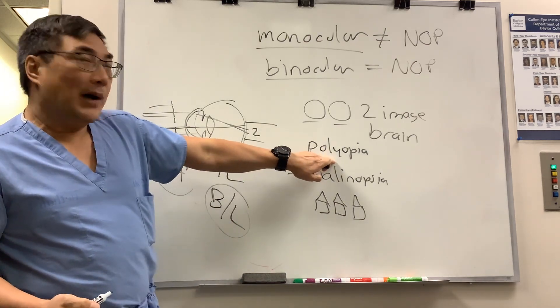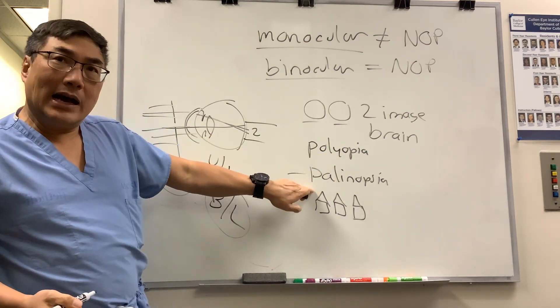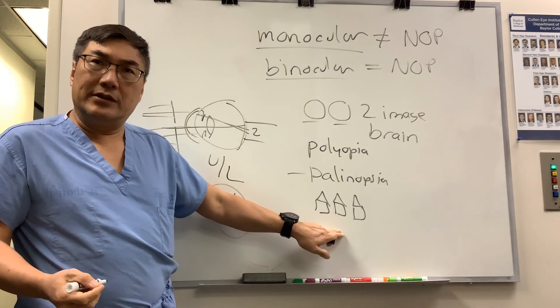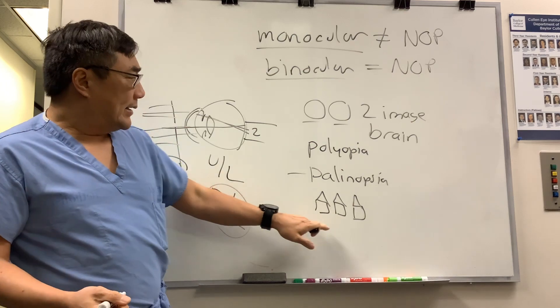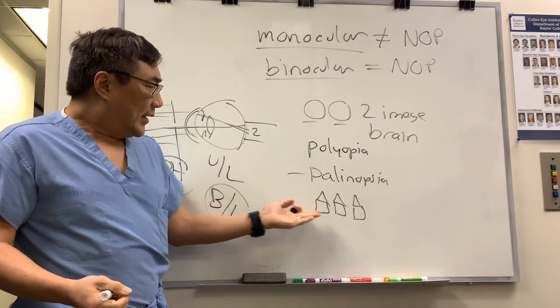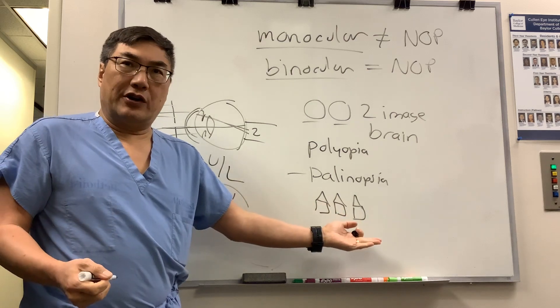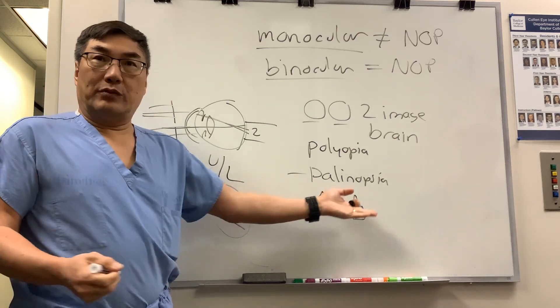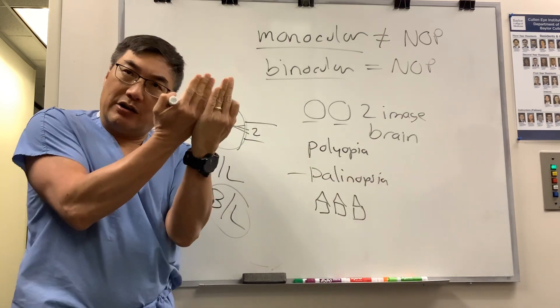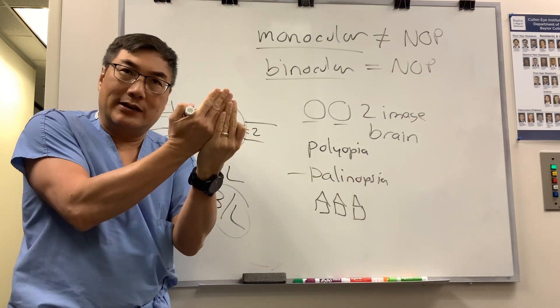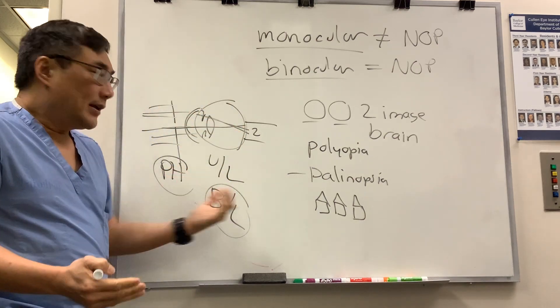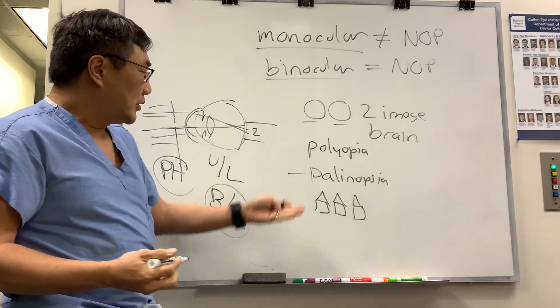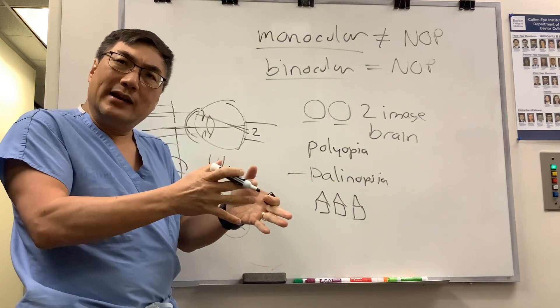Both cerebral polyopia and palynopsia are brain representations of duplicated image. The key differentiating features are it's the same image over and over again. All the images are clear. It's often more than one image, not just two. They're not overlapping on each other, one blurry and one clear. Pinhole doesn't make it go away. And they usually have some other neurologic signs or symptoms, so it'd be unlikely to just be one symptom.